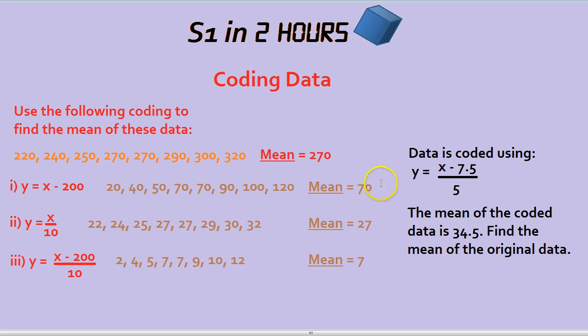How about this? Yes, this looks like an examined kind of question. Data is coded using the code y equals x take away 7.5 divided by 5. The mean of this coded data is 34.5. Find the mean of the original data. By now, you might see that what you need to do is reverse the coding to get back to the original.